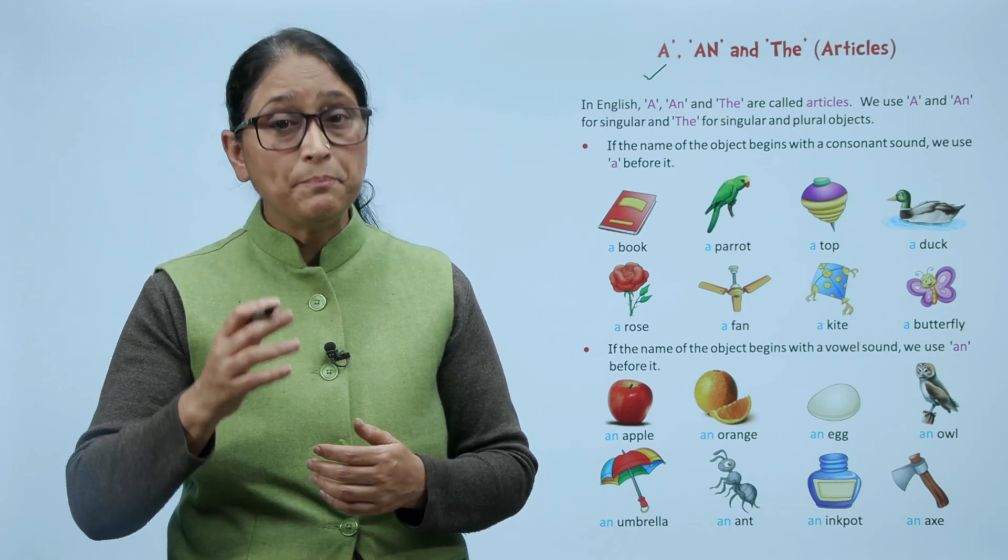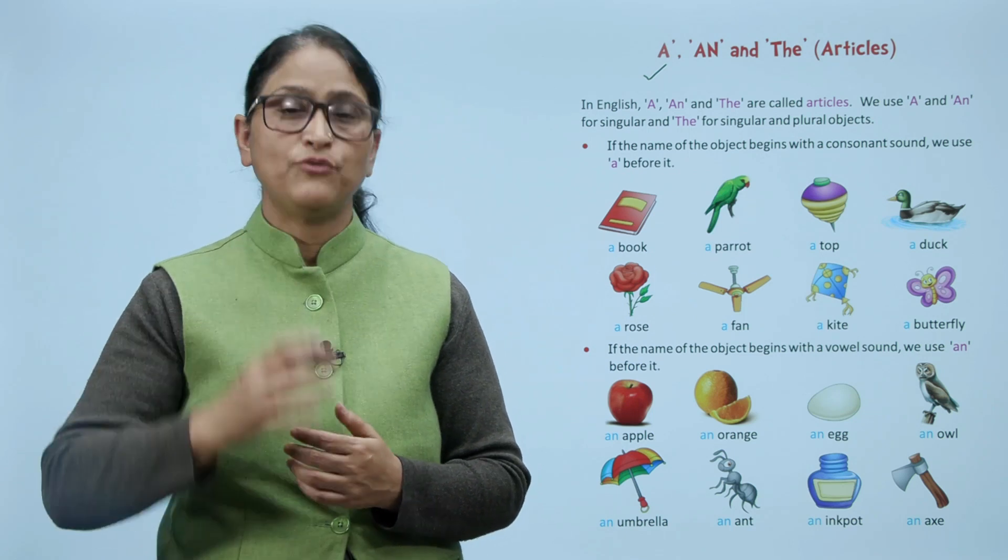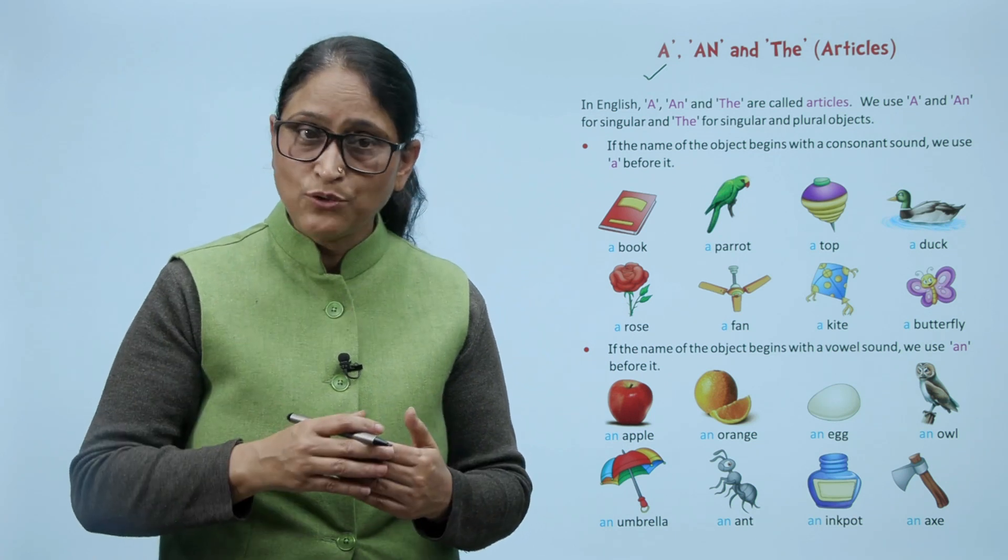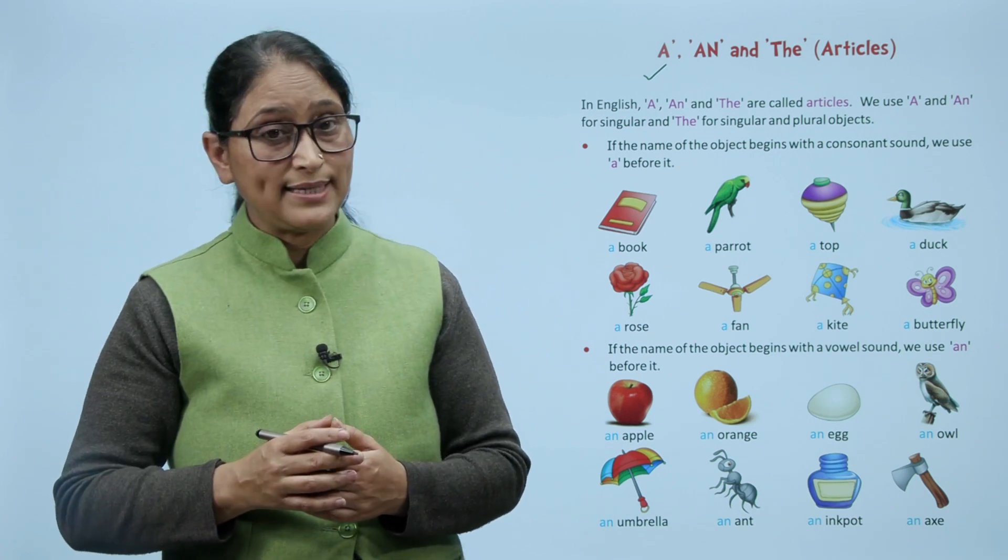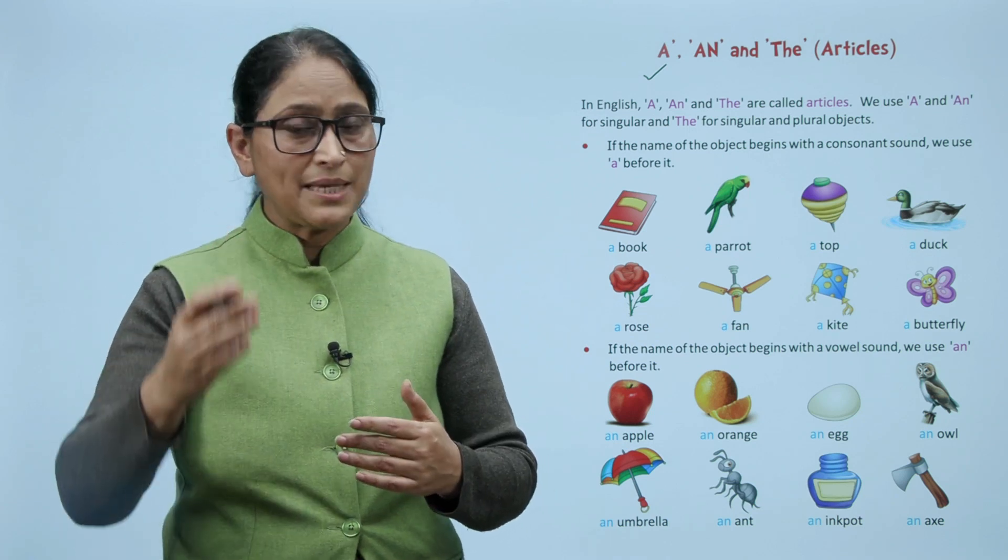If the name of the object begins with a consonant sound, we use A before it. Agar consonant sound se shuru hua hai to hum usse pehle kya use karenge? A. For example, book - B is a consonant, is ke pehle kya use karenge? A. A book.